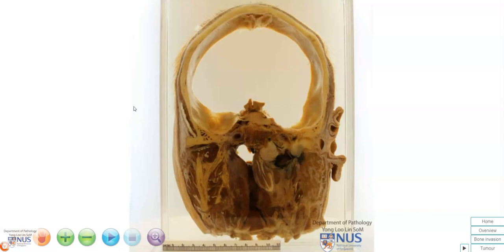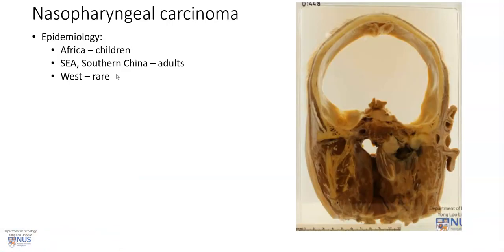This is a tumor that occurs in different age groups depending on the geographic location. For example, in Africa it tends to occur in children. However, in Southeast Asia and Southern China, it is a disease of adults and it is rare in the West.